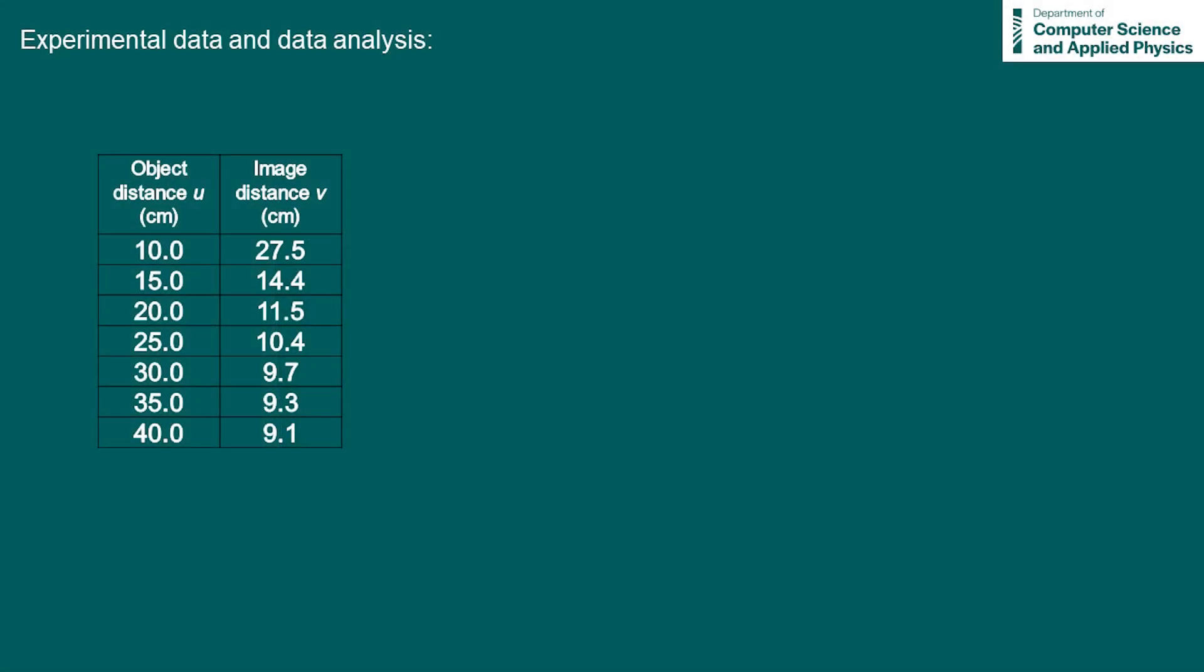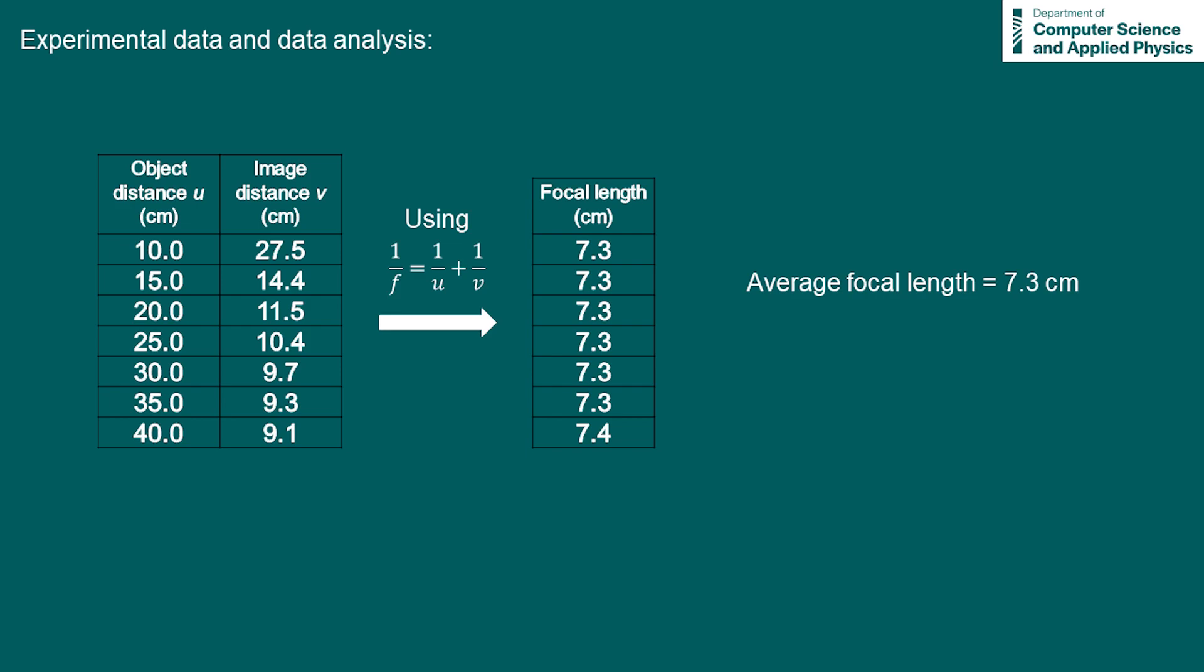So here's our experimental data. For seven different object distances, we have measured the seven corresponding image distances. We could now use the lens formula to calculate a value for the focal length for each of our measurements. The average of these values was then found to be 7.3cm.